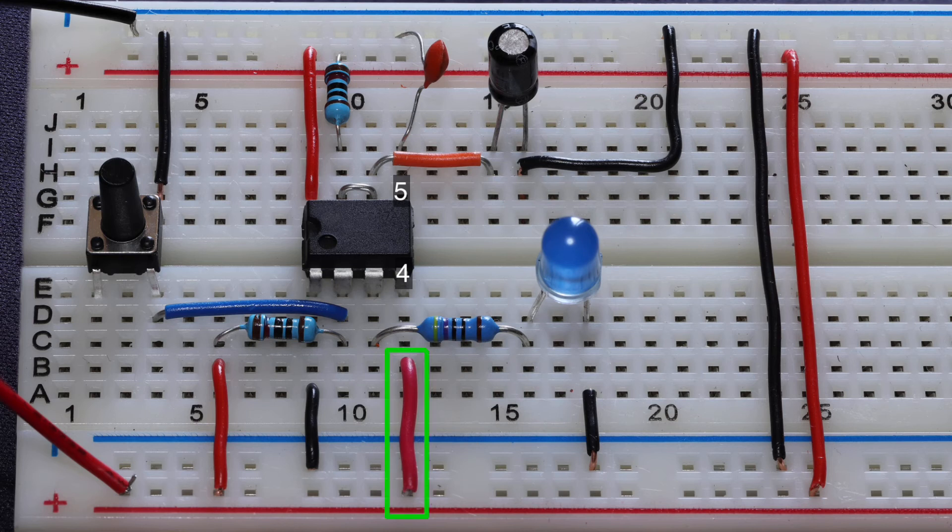And you can see I've connected pin 4 there with a red jumper wire to the positive power rail on the breadboard.